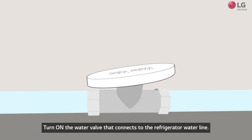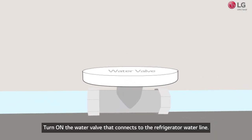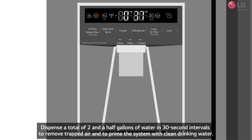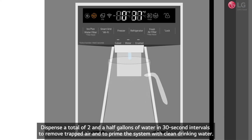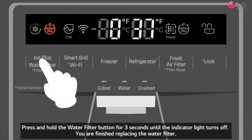Turn on the water valve that connects to the refrigerator water line. Dispense a total of 2.5 gallons of water in 30-second intervals to remove trapped air and to prime the system with clean drinking water. Press and hold the water filter button for 3 seconds until the indicator light turns off. You are finished replacing the water filter.